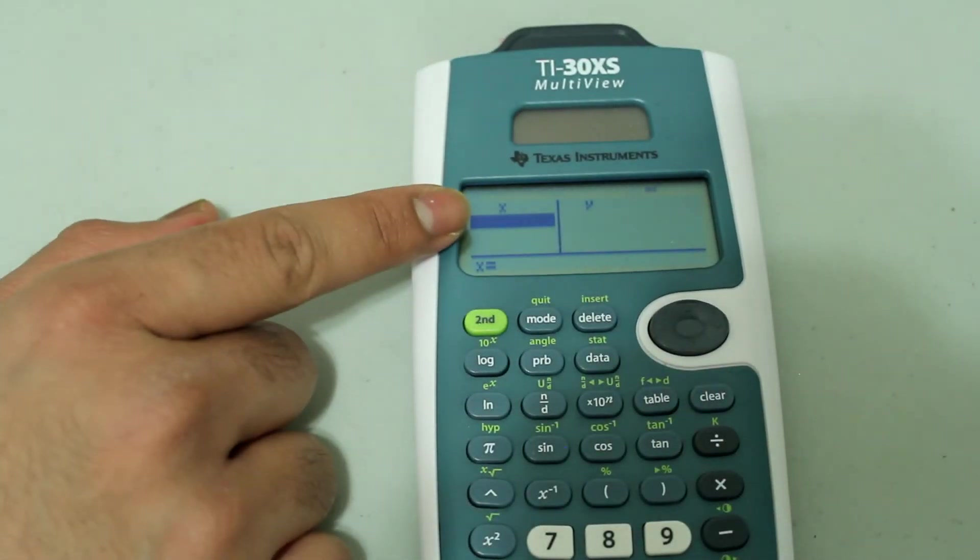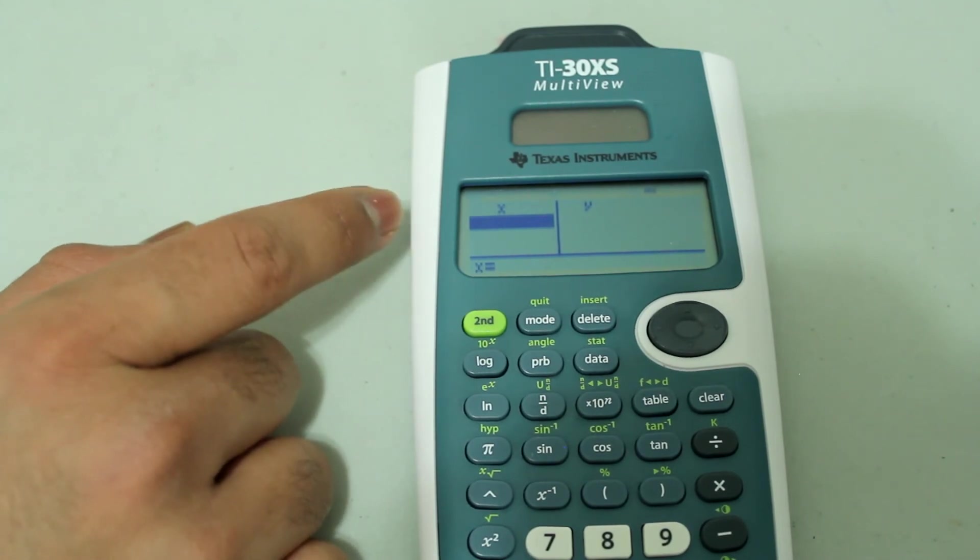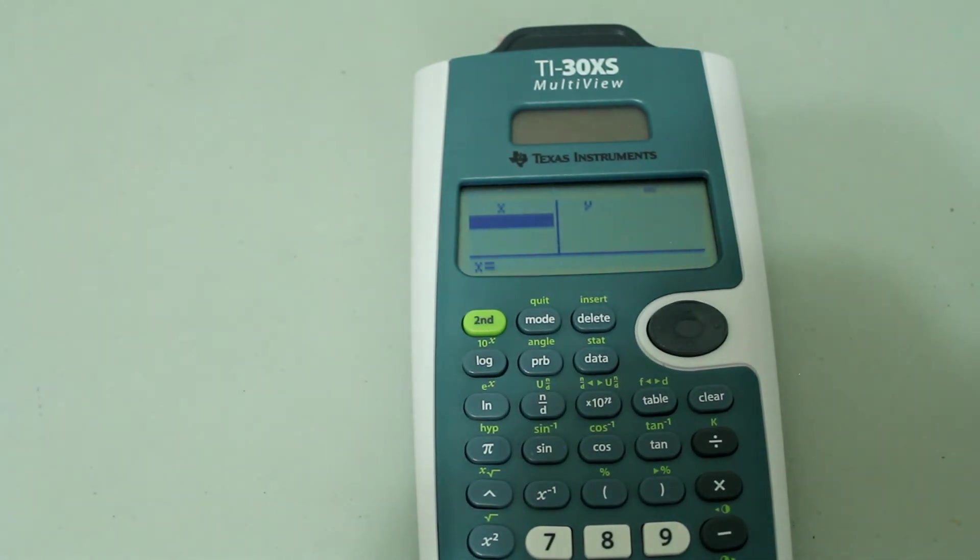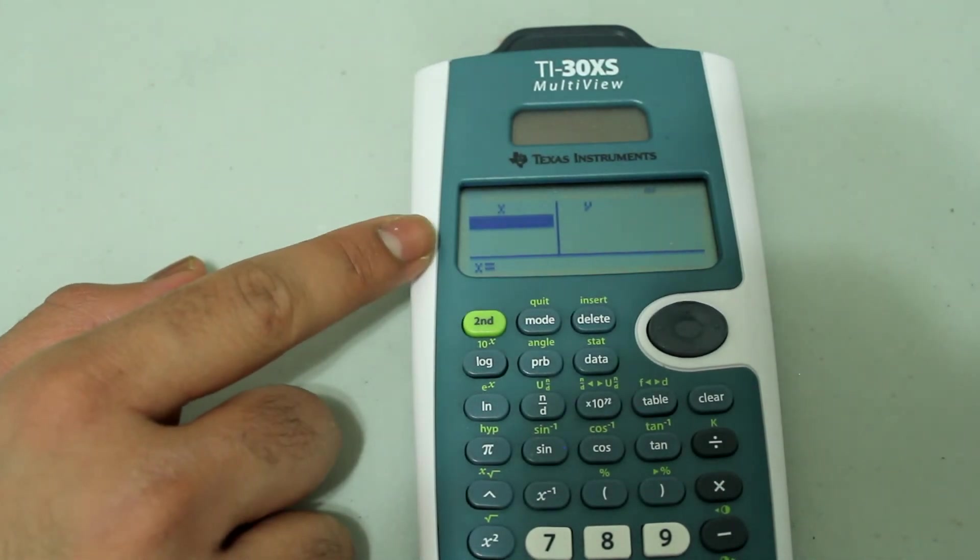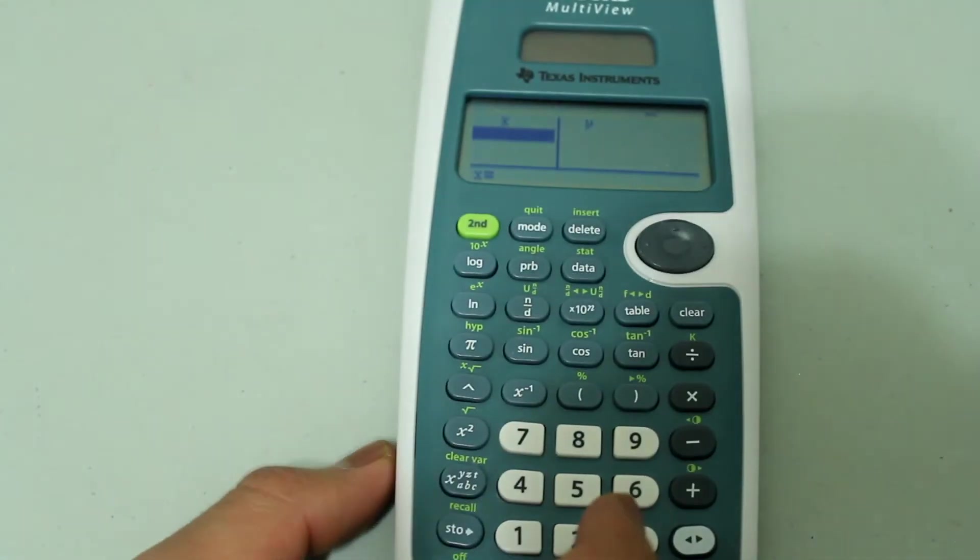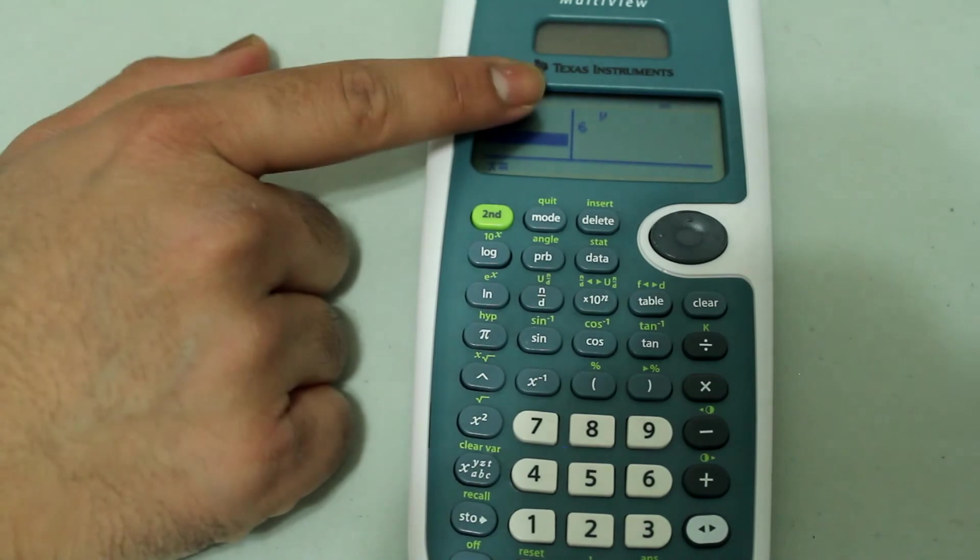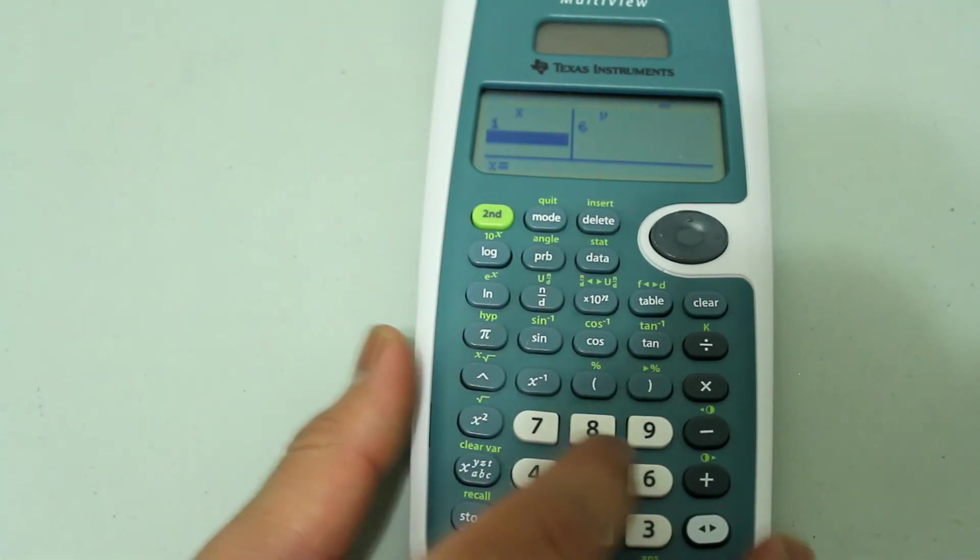Notice that the table comes up blank. That is because the ask-x allows you to manually choose your x values. If I start typing in x values, the calculator will fill in the y value. For example, I'm going to type in 1, press enter. See, the corresponding y value comes with it.